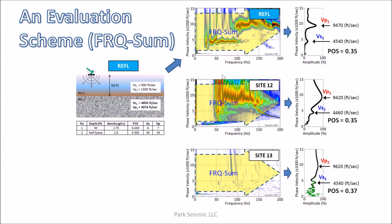Although we can make a rough estimation for velocities of the horizontal energy trends based on visual inspection, we can invent a simple scheme that provides more objective estimation. Because we are concerned about non-dispersive seismic events of bedrock refractions appearing as horizontal energy trends in the dispersion image, we sum all the amplitudes in a given dispersion image along the horizontal direction of the frequency axis, producing a curve in which we can identify two peaks corresponding to VS and VP of bedrock. This approach is named the frequency summation scheme.